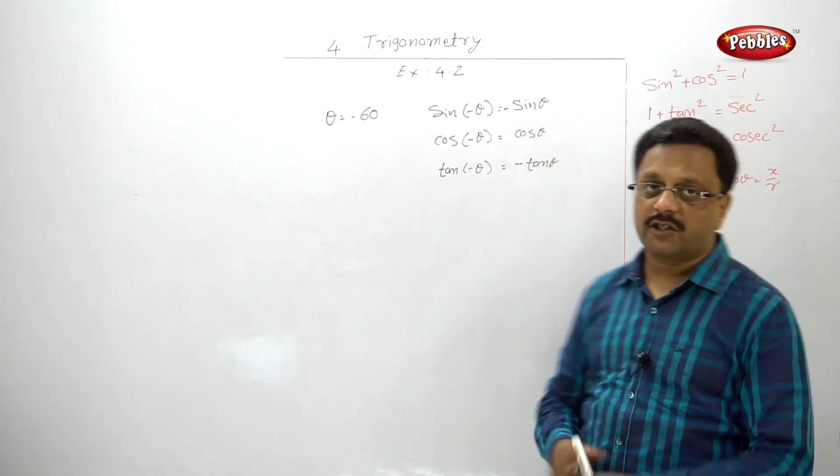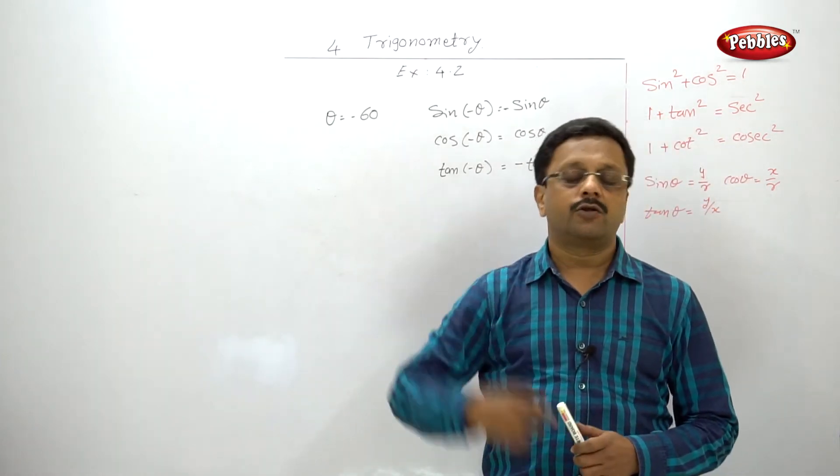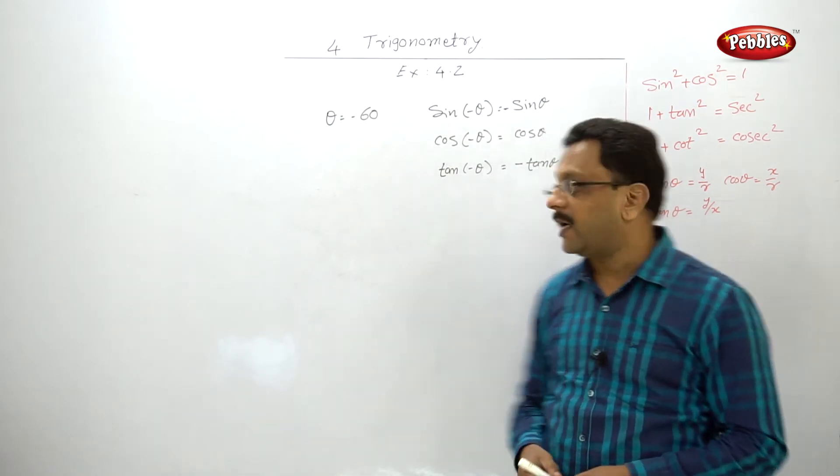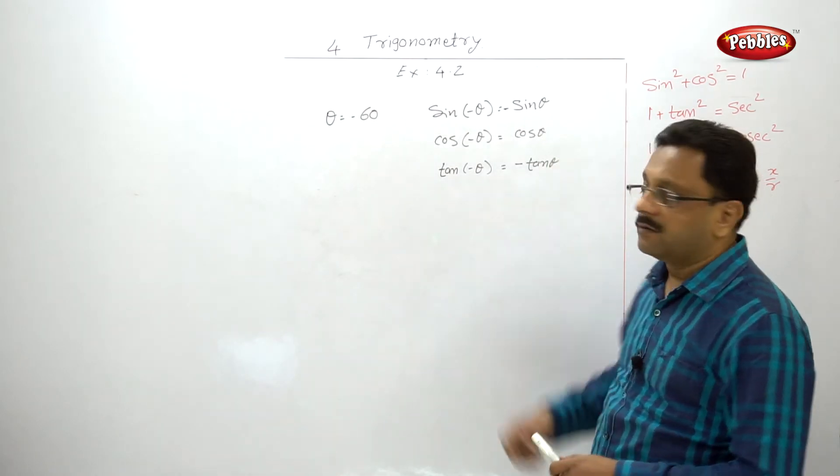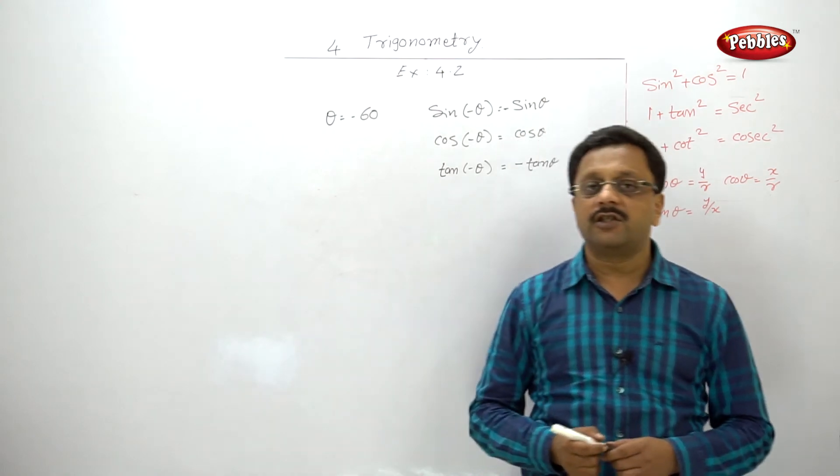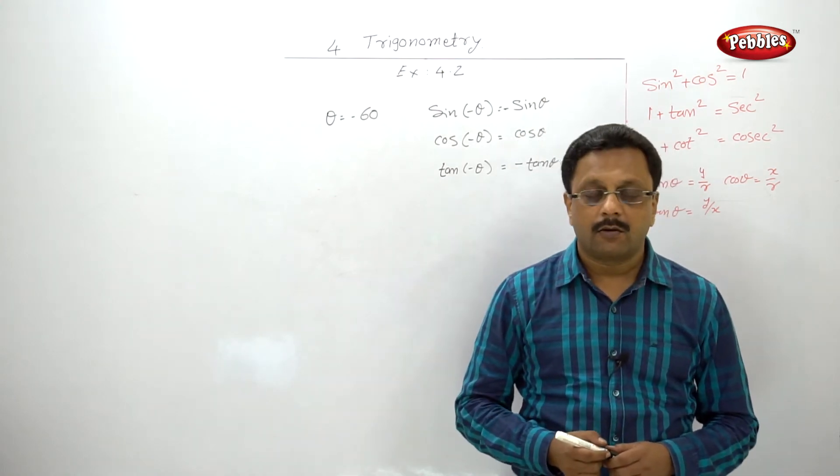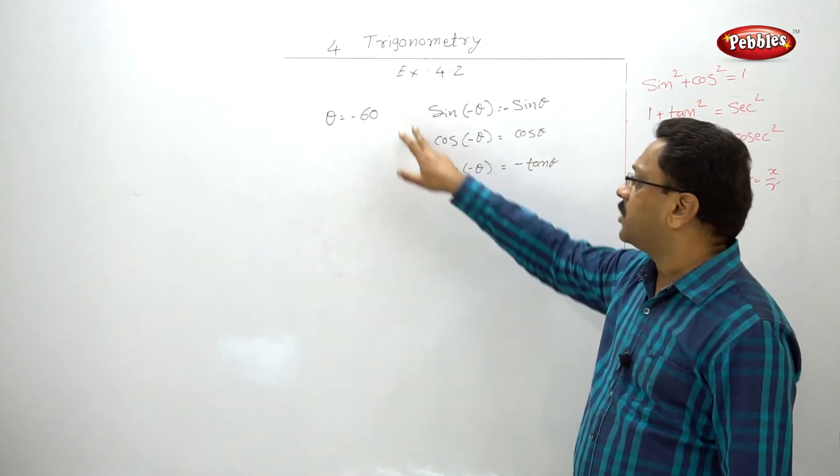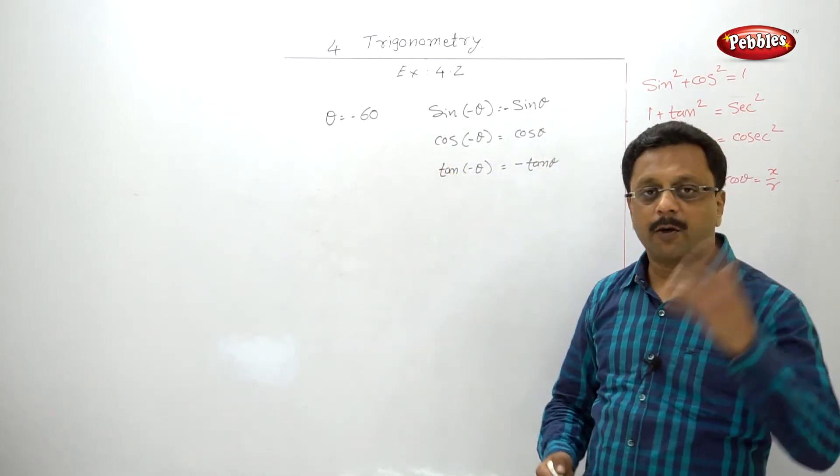What is cos 60°? Cos 60° is 1/2. Draw that triangle virtually in front of your eyes. And what is tan 60°? Tan 60° is √3. Based on that, just find out the values of cosec, sec, and cot. Please pause your video here and solve that.